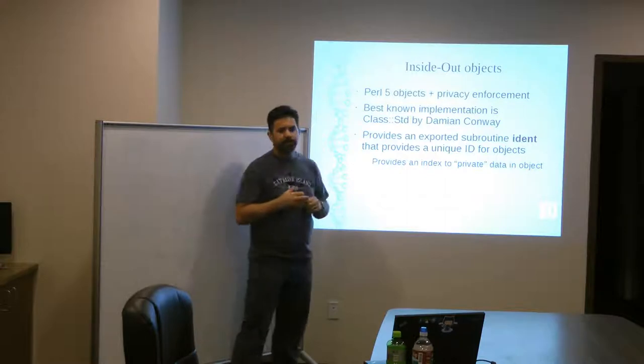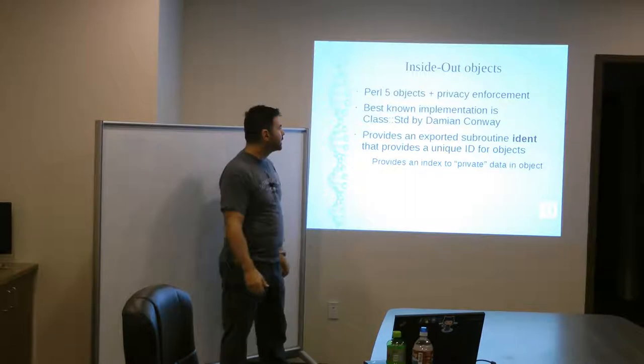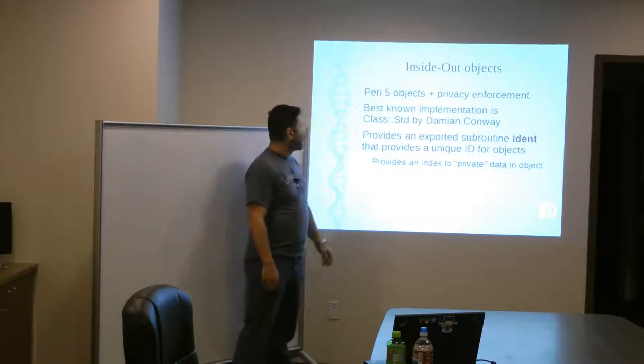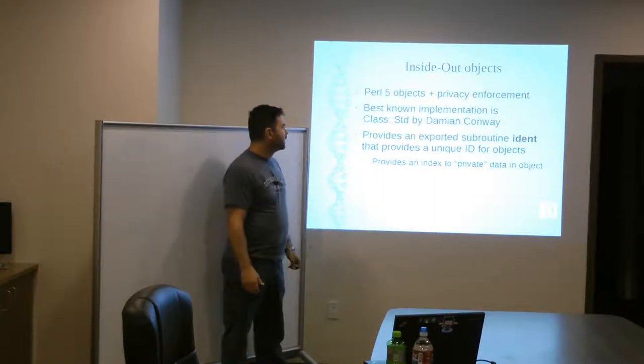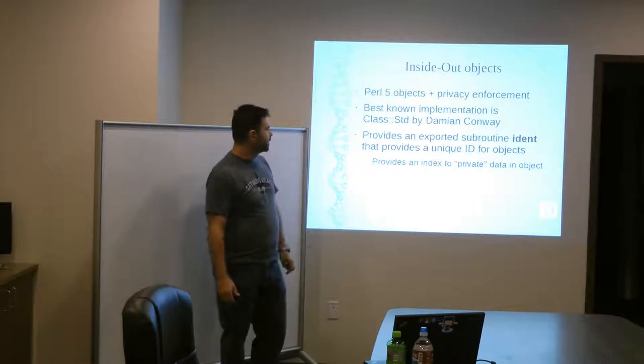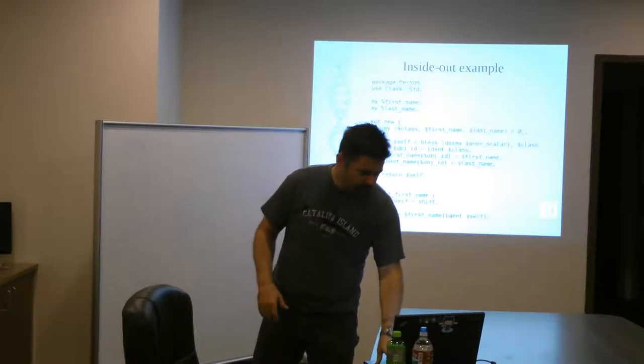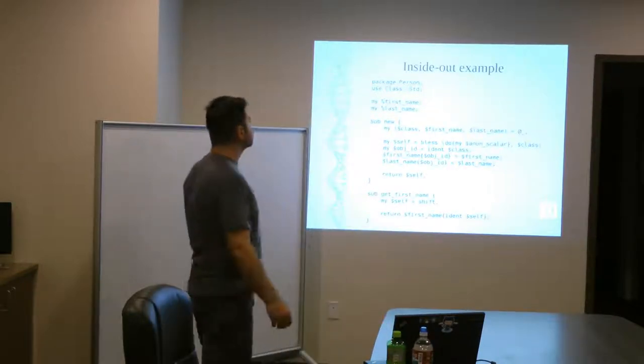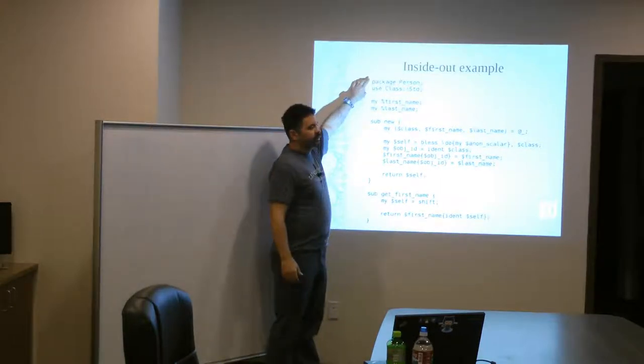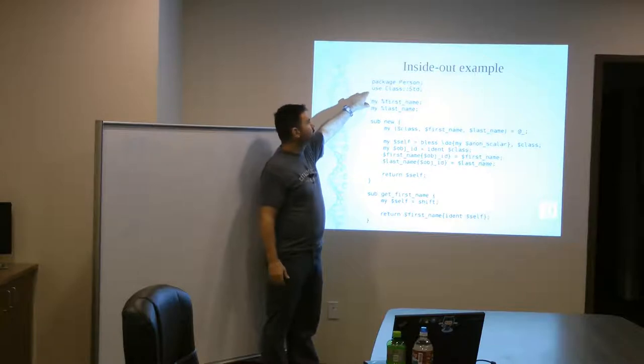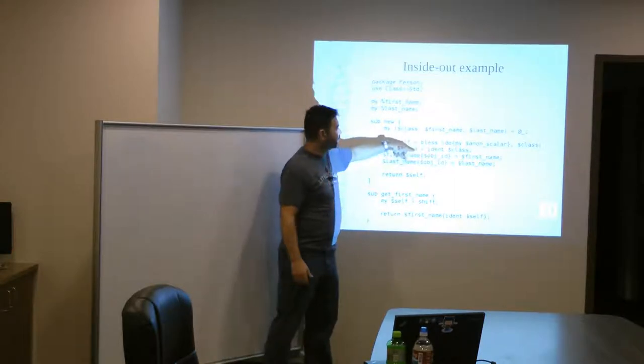And there are several implementations of this. But the best known one is the one that Damien has published on the CPAN, it's called Class STD. And it provides an exported subroutine called IDENT that provides a unique ID for objects. And this is, he takes advantage of the lexical scope within a package. So, here's an example. In this, he's got a, this class is called Person. And so, he uses the class STD that provides us with the IDENT method that we can use in here.